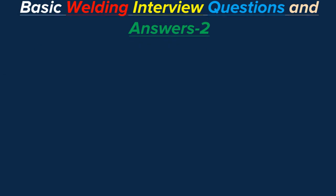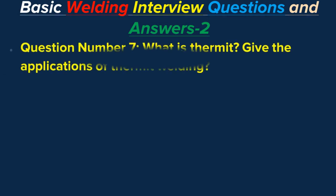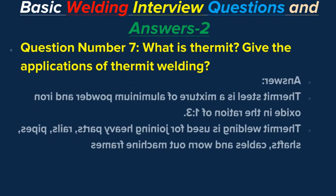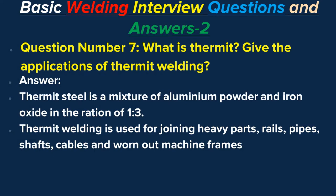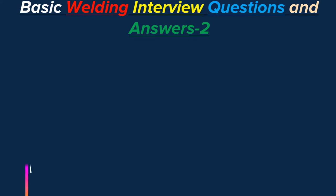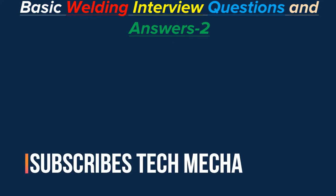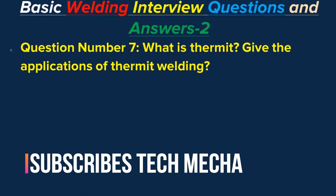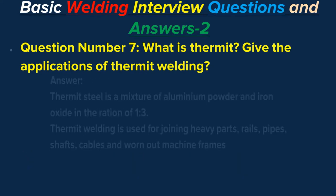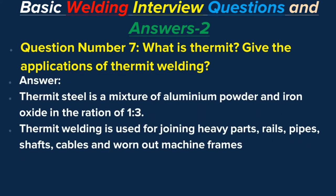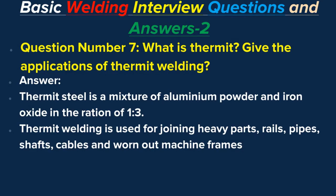Question number seven: What is thermit welding? Give its applications. Answer: Thermit is a mixture of aluminum powder and iron oxide in the ratio of 1 to 3. Thermit welding is used for joining heavy parts, rails, pipes, shafts, cables, and worn-out machine frames.